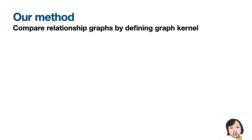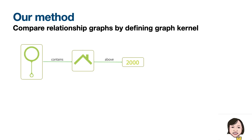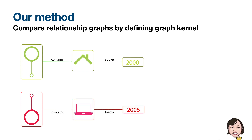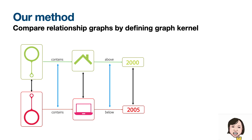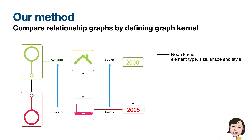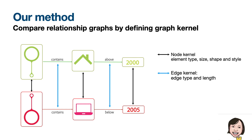Then we compute correspondences between their nodes by defining a graph kernel. For each element, we take a walk along the edges of the graph. Starting from the green bubble element, this is a walk of length 2. And likewise, for the target graphics, starting from the red bubble element. A graph kernel compares these two walks by comparing how similar each node and edges are. Specifically, we define a node kernel that compares the element's types, sizes, shapes, and style attributes, and an edge kernel that compares the edge type and Euclidean distance.